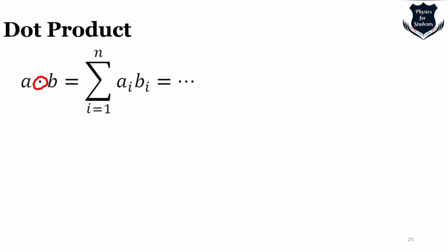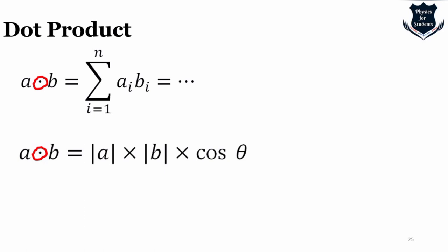The dot is also used to denote the dot product. Algebraically, the dot product is the sum of the products of the corresponding entries of two sequences of numbers. Geometrically, it is the product of the Euclidean magnitudes of two vectors and the cosine of the angle between them. The dot product, or scalar product, is an algebraic operation that takes two equal-length sequences of numbers and returns a single number.